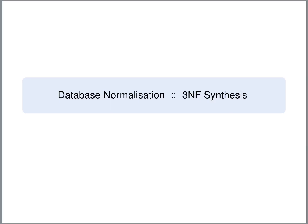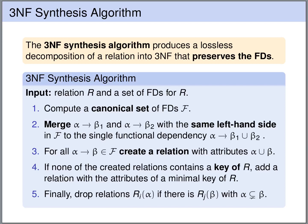The third normal form has the advantage that the transformation preserves all functional dependencies. So what we have seen on the last slide, that the functional dependency gets lost, does not happen with the transformation to third normal form. Also for the third normal form we are not going to arbitrarily split tables, but we are going to use a synthesis algorithm that results in a particularly nice third normal form. The synthesis algorithm produces a lossless decomposition of a relation into third normal form that additionally preserves all the functional dependencies.